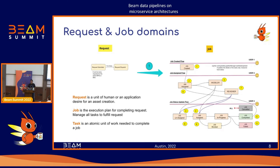The request then goes through a verification process — it checks whether a 3D model already exists, whether that model can be reused, or if a new model needs to be created. Based on that, it dispatches the request, which triggers another event. This creates a job, which goes through its own pipeline: job being assigned, job being submitted, job being assigned to a modeler or reviewer — all these tiny blocks are respective events that are produced.